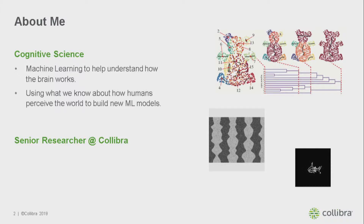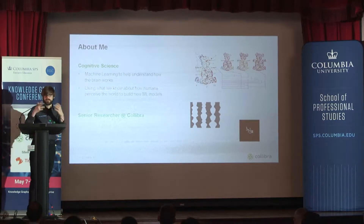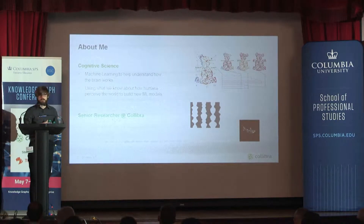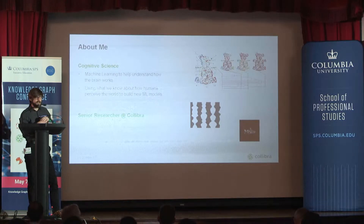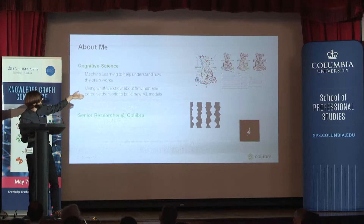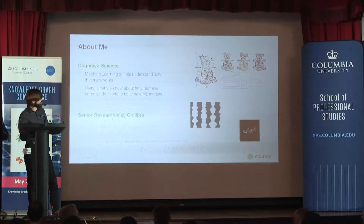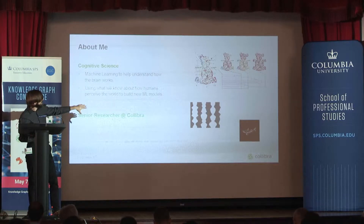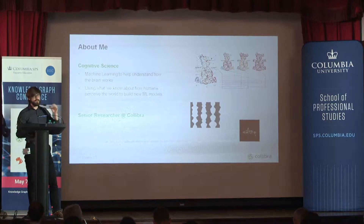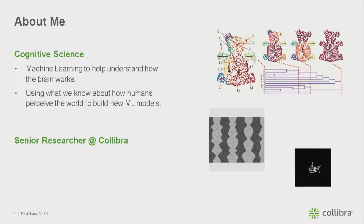I worked, for example, on how we represent objects in our brains. How do humans represent objects? One of the things I worked on is representing objects as a hierarchy of their subcomponents. Other things I did were illusions. Illusions are a very interesting way to understand how visual representations work and how the brain works, because they break stuff. And when stuff breaks, that's where you learn stuff.